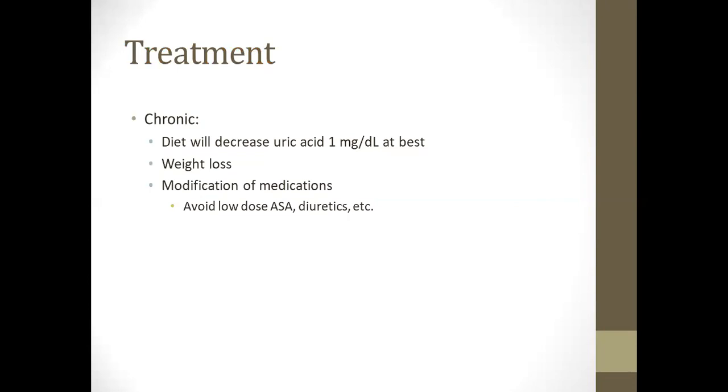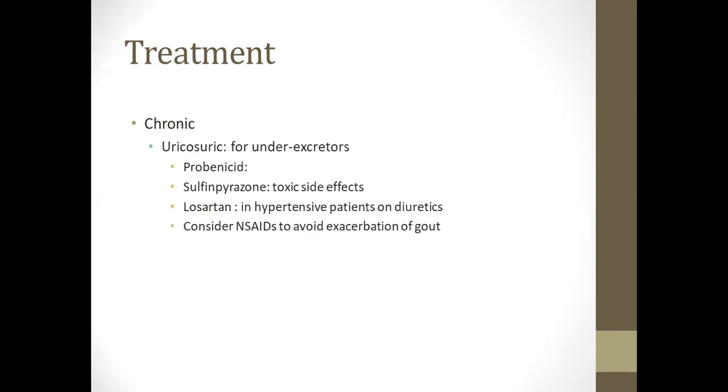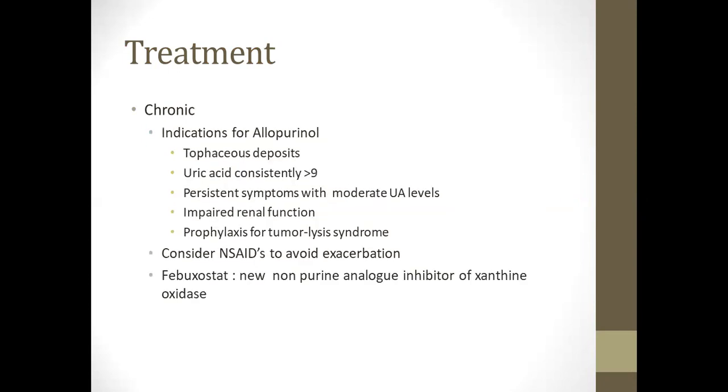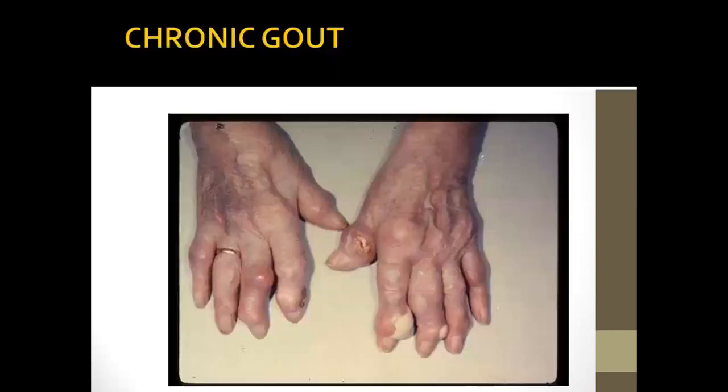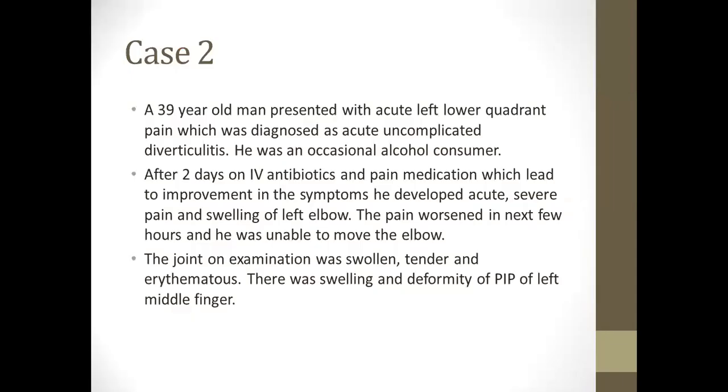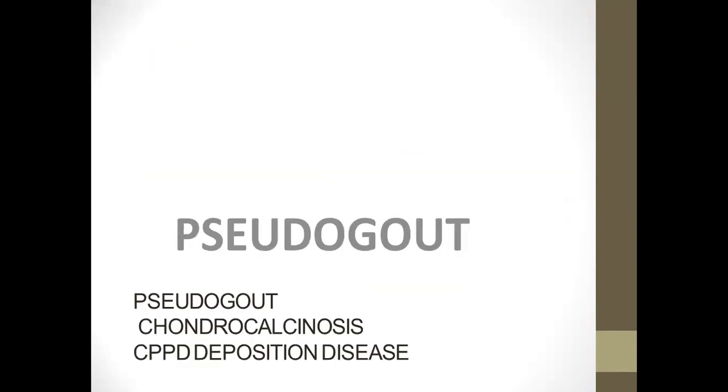Diet will decrease uric acid by 1 mg per deciliter at best. Weight loss and modification of medication will work. Uricosuric drugs and urate-lowering drugs can be used.